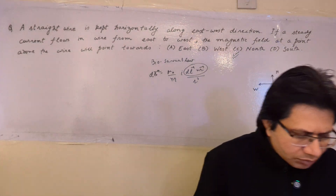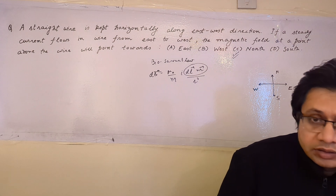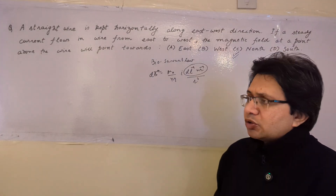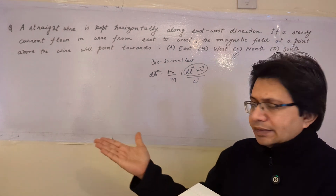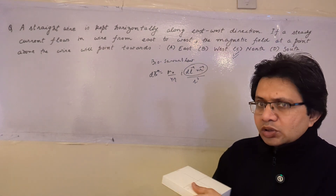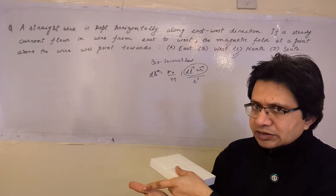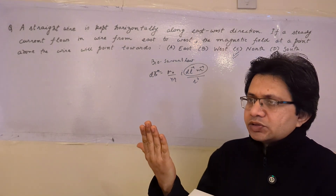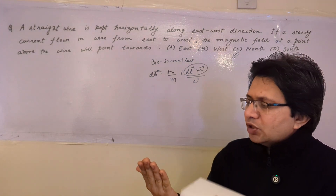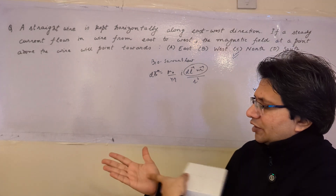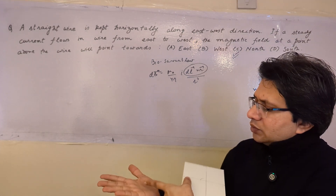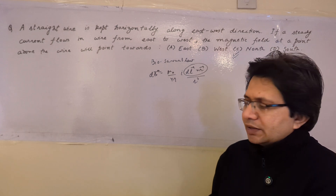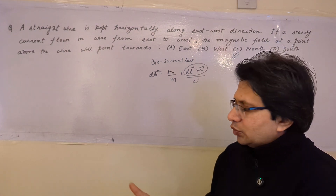Using the right-hand palm rule, we place our right-hand thumb along the direction of current and the fingers pointing to the point where we want to find the magnetic field. The palm is then perpendicular to the direction of the magnetic field according to this rule.